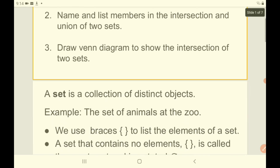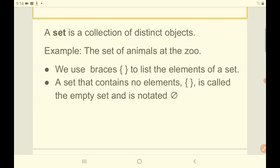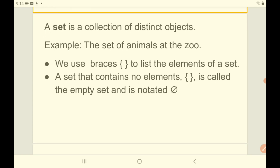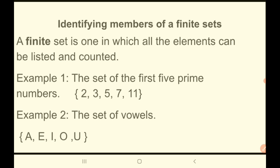Now, let us look at a set. What is a set? A set is a collection of distinct objects. For example, the set of animals at the zoo. There can be a zoo with animals such as a giraffe, zebra, and an elephant, so that set could have three elements. We use braces to list the elements of a set. A set that contains no elements is called an empty set.